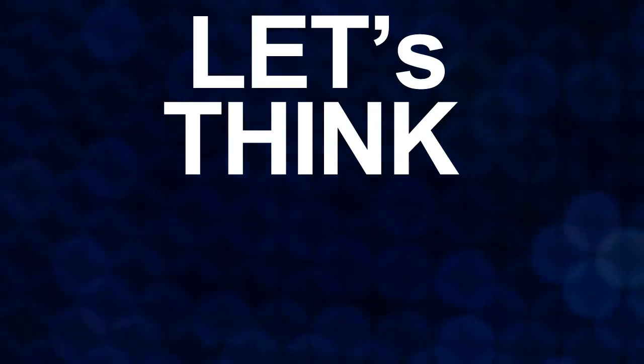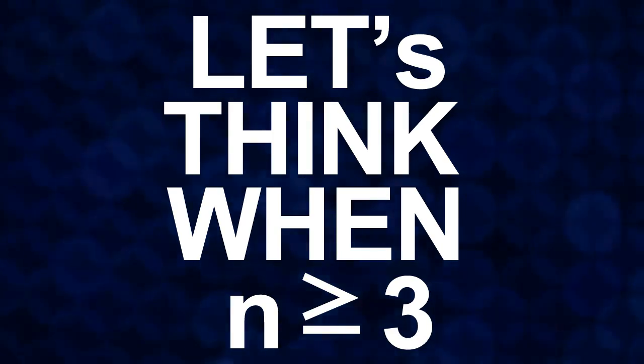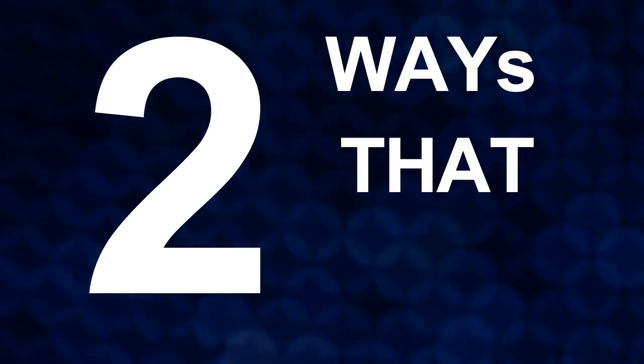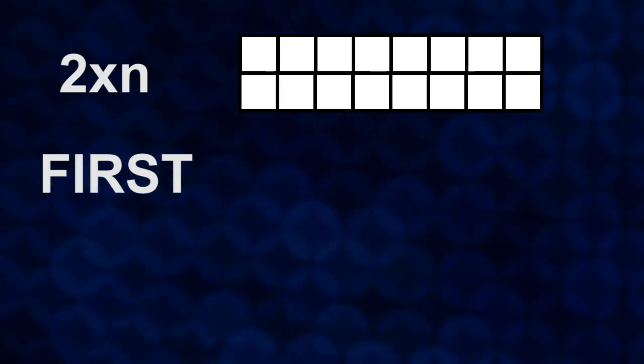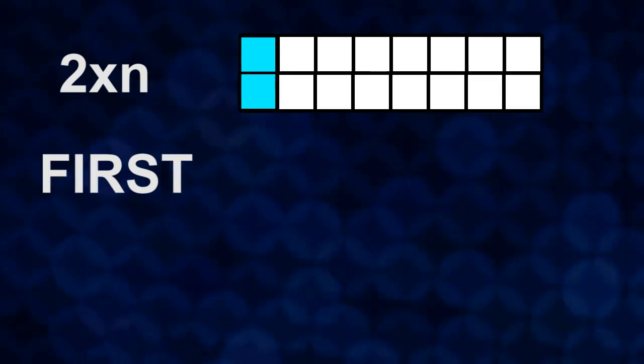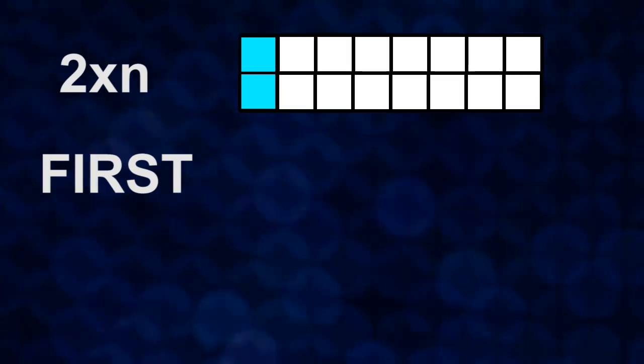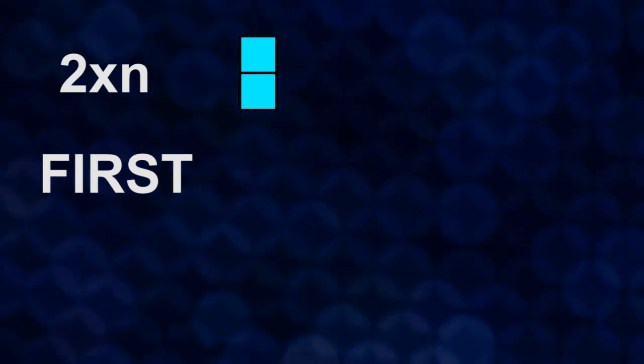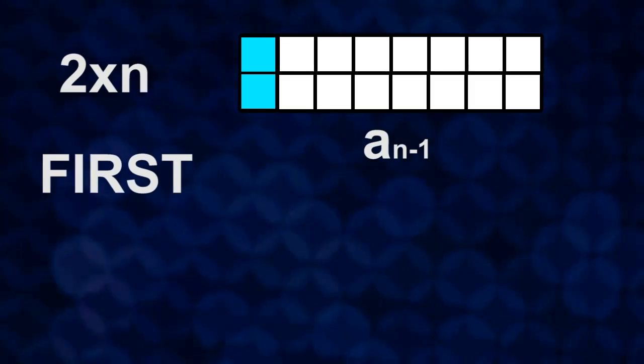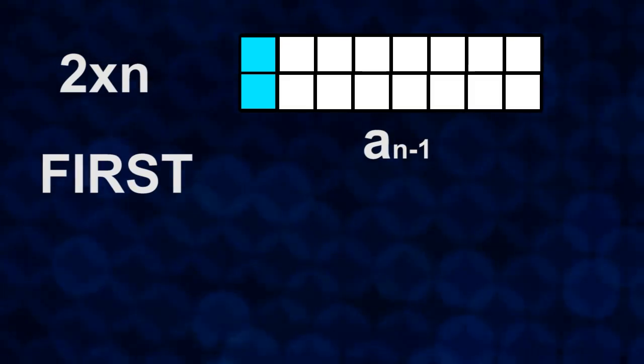You can see in the picture, so a2 is equal to 3. Now, let's think when n is over or equal to 3, then there are two ways that we can cover 2 cross n board. First, when left side is covered with 2 cross 1 blocks standing horizontally. In this case, the number of ways that cover 2 cross n board is same with the number of ways to cover 2 cross n-1 board. So, there is a n-1 ways.